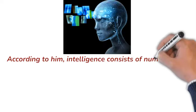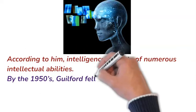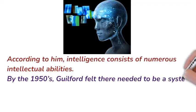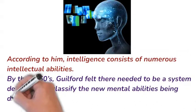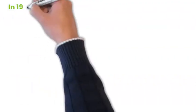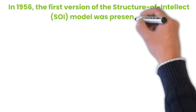According to Guilford, intelligence consists of numerous intellectual abilities. By the 1950s, Guilford felt there needed to be a system developed to classify the new mental abilities being discovered. In 1956, the first version of the Structure of Intellect model was presented.